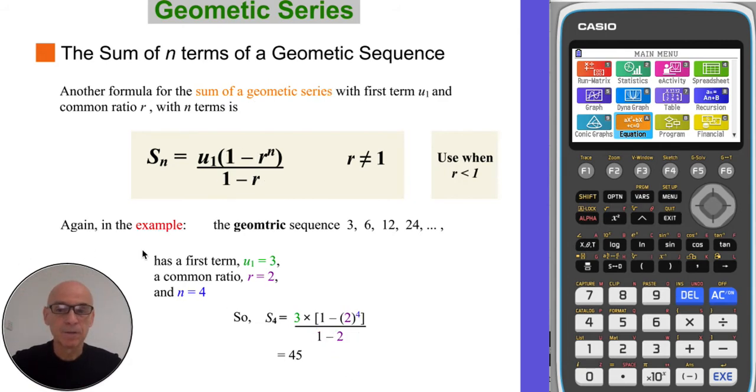The other version of the formula, given in your formula booklet, basically just switches around the order on the top and the order on the bottom. And it's best used when the common ratio is less than 1. However, either version will work so long as we perform the calculation correctly.